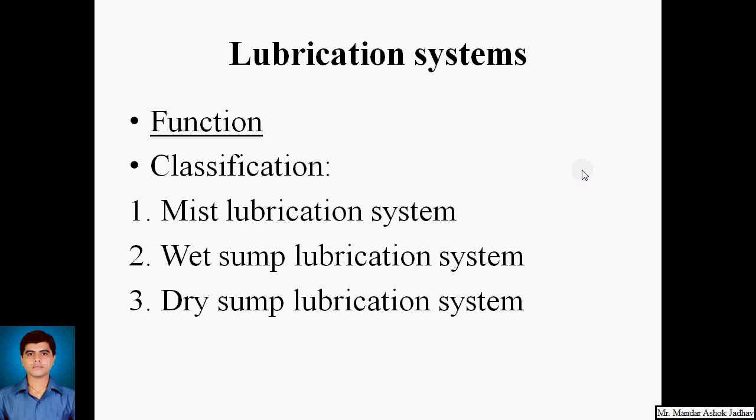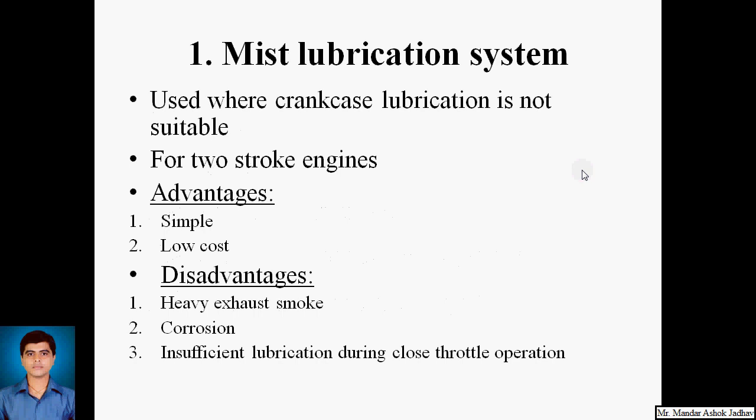The various lubrication systems used in internal combustion engines are: first, mist lubrication system; then wet sump lubrication system; and dry sump lubrication system. The mist lubrication system is used where crankcase lubrication is not suitable — basically in two-stroke engines, as the charge is compressed in the crankcase, it is not possible to have lubricating oil in the sump. Hence, mist lubrication is adapted in practice.